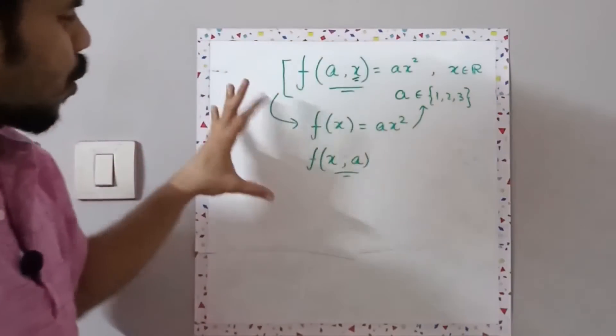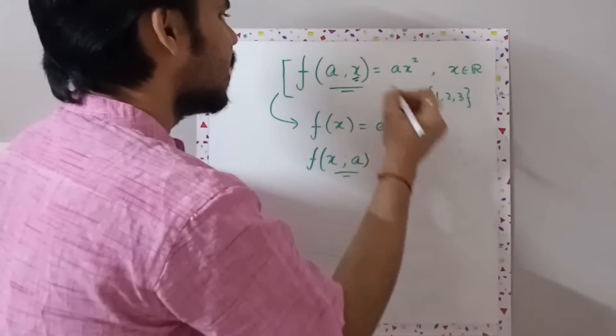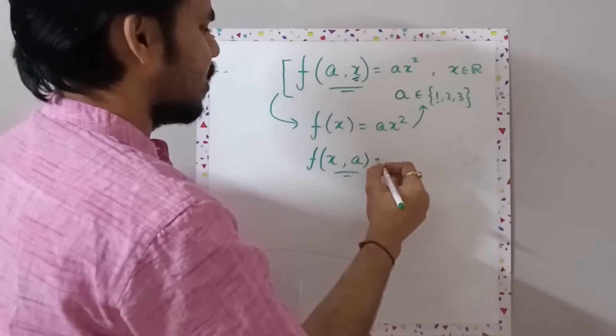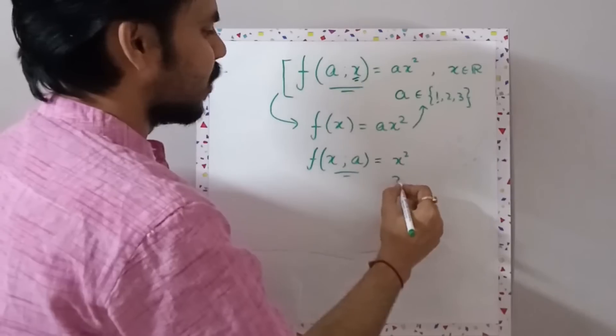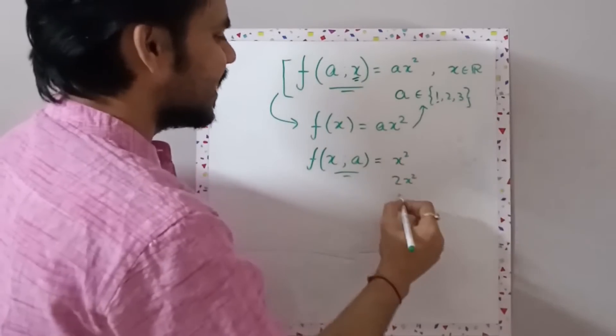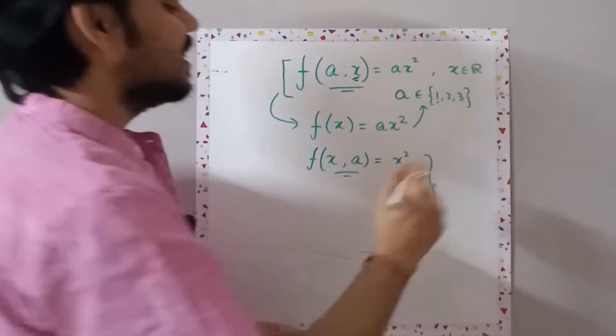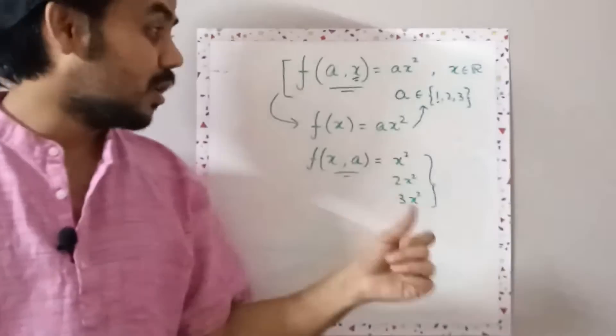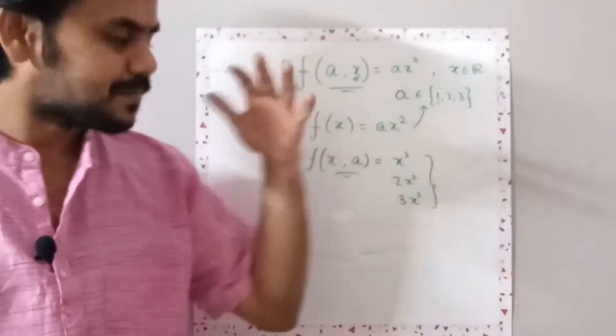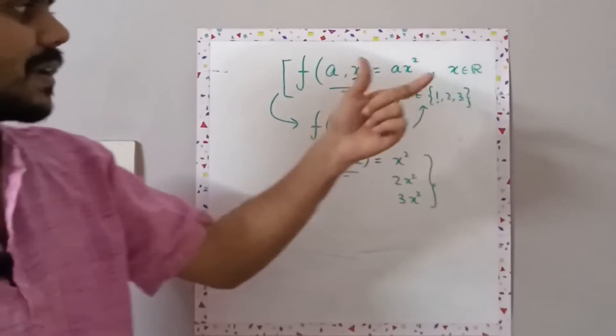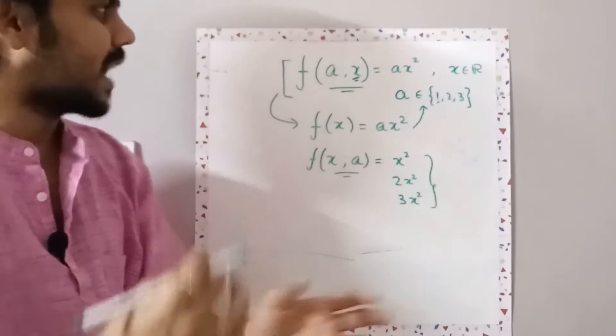Now what happens when we have this kind of structure? If I take a=1, my f(x,a) or simply f(x) will be x². If I take 2, it will be 2x². And if I take 3, it will be 3x². So you can understand that all these three are different functions altogether, but we are combining them by the help of the parameter.